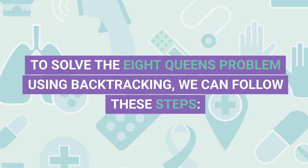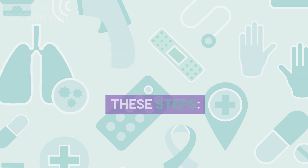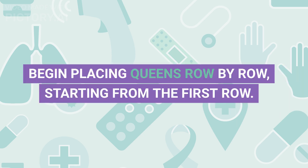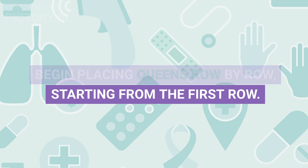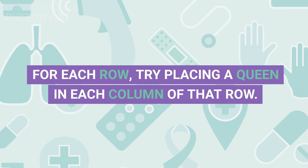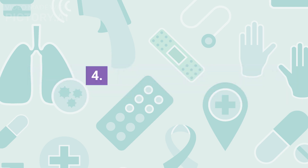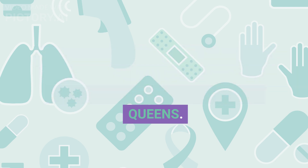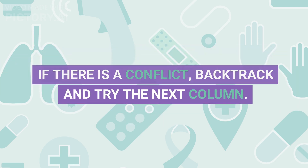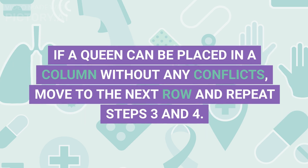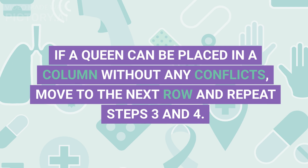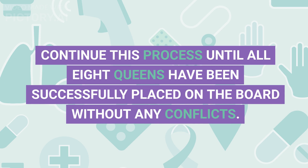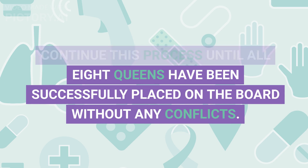To solve the 8 Queens Problem using backtracking, follow these steps. 1. Start with an empty 8x8 chessboard. 2. Begin placing queens row by row, starting from the first row. 3. For each row, try placing a queen in each column of that row. 4. Check if the queen placed in the current column conflicts with any previously placed queens. If there is a conflict, backtrack and try the next column. 5. If a queen can be placed without any conflicts, move to the next row and repeat steps 3 and 4.